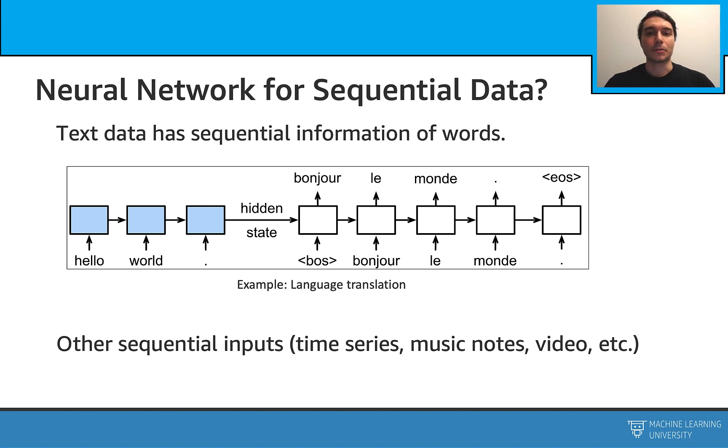What are some other types of sequential data? For example, time series data, audio, and video frames.